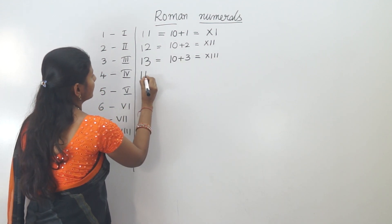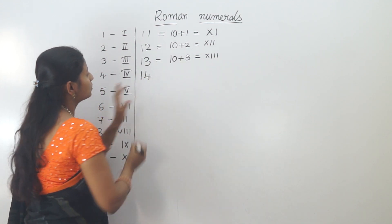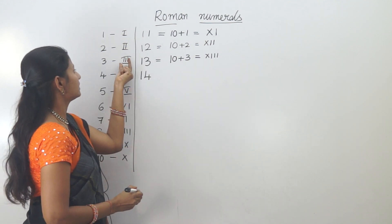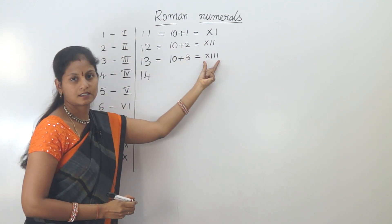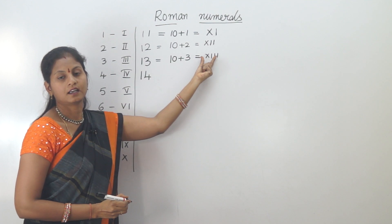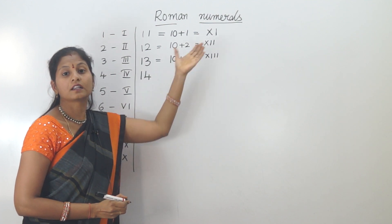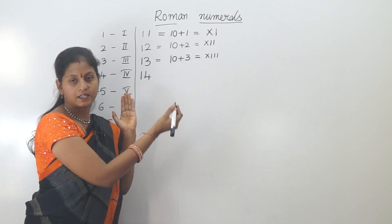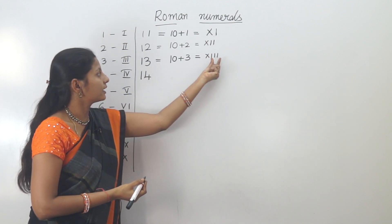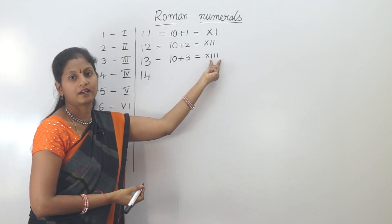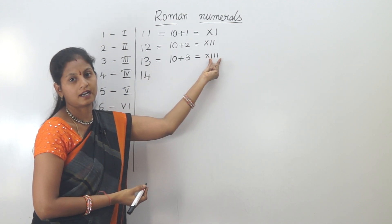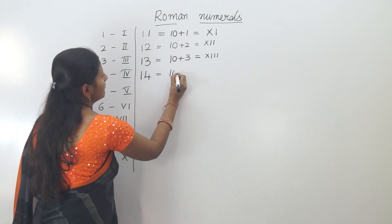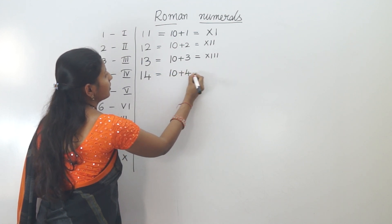Next, 14. If you expand 14, it is 10 plus 4. Ten is X. Now for 4, we cannot write I four times in a row.